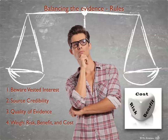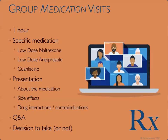To summarize, we're looking at balancing the evidence using four rules: beware vested interest, how credible is the source, what's the quality of the evidence, and weigh the risk, benefit, and cost. We're going to do group medication visits — not group medical visits. The format is one-hour sessions on specific medications. The first three will be low dose naltrexone, low dose aripiprazole, and guanfacine. Participating in the session is not a commitment to taking the medication. I'll do a detailed presentation about each medication, discuss side effects, drug interactions, and contraindications in detail, have a Q&A session, and then you can make a decision. I'll send a prescription to your pharmacy if you decide to proceed.